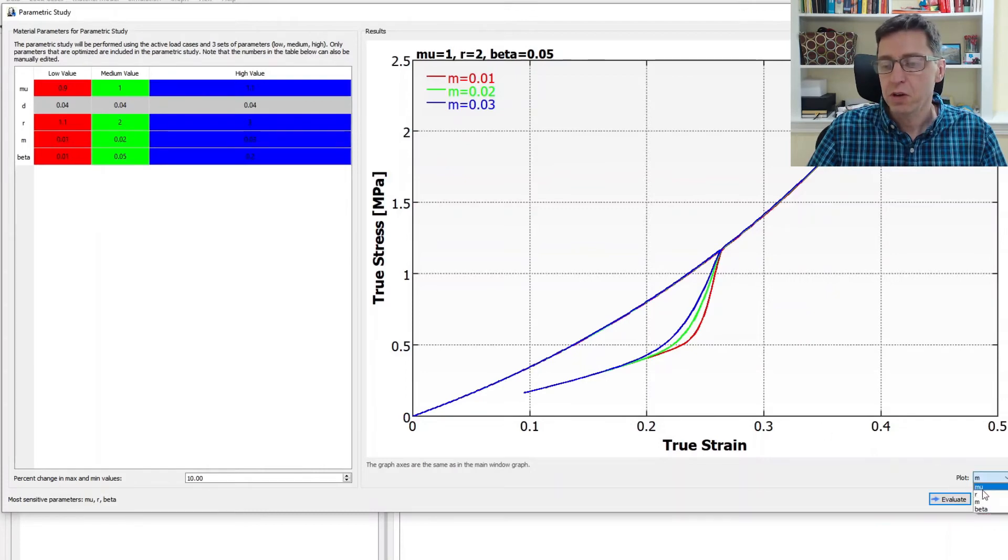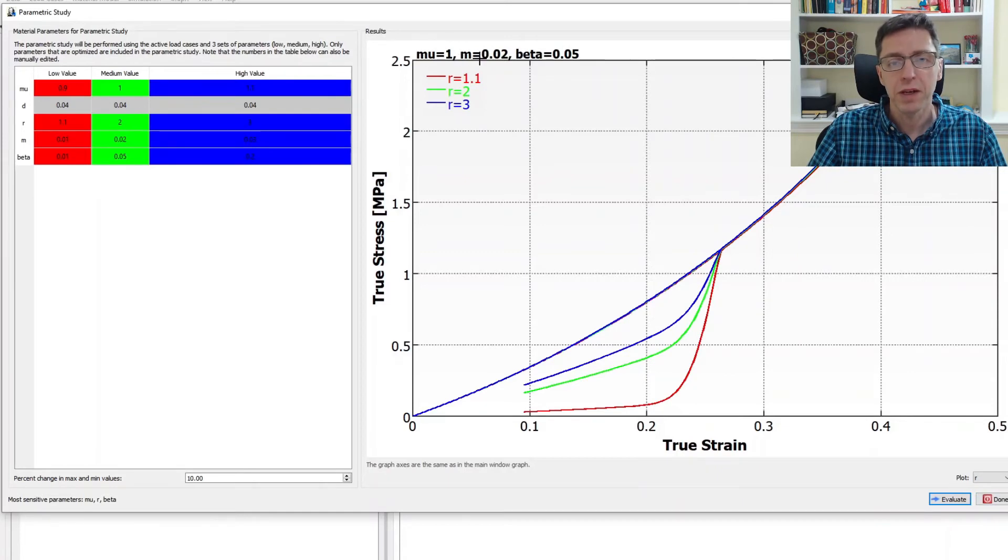If you now change to the R value, you'll see that with these values, mu is equal to 1, M is 0.02, and beta is 0.05. The R value is directly corresponding to how far it drops, and the M value is how rapidly it initially drops. So that's how R and M influence the results here.